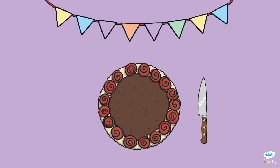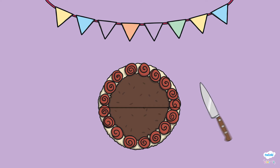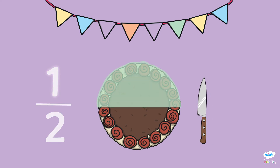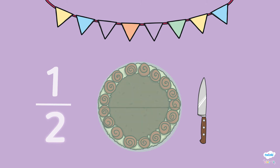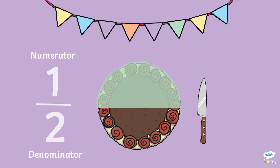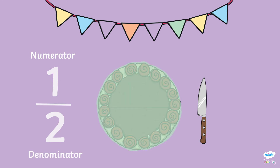It's time to cut the cake! Let's cut the cake in half. Look at one half of the cake light up. This represents one out of the two pieces. The numerator is one. There are two pieces all together. This is the denominator, the bottom number of the fraction.